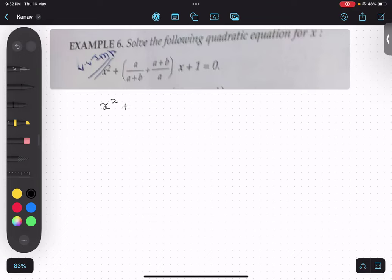So it will be x² plus a upon a plus b times x plus a times b upon a times x plus 1 equals to 0. Is that thing clear?